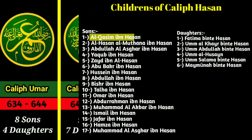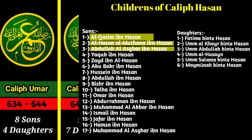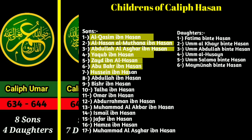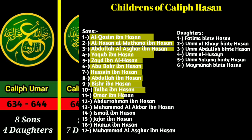Al-Qasim ibn Hassan, Al-Hasan al-Mathana ibn Hassan, Abdullah al-Ashgar ibn Hassan, Yaqob ibn Hassan, Zaid ibn al-Hassan, Abu Bakr ibn Hassan, Hussein ibn Hassan, Abdullah ibn Hassan, Bishir ibn Hassan, Talha ibn Hassan, and Omar ibn Hassan.